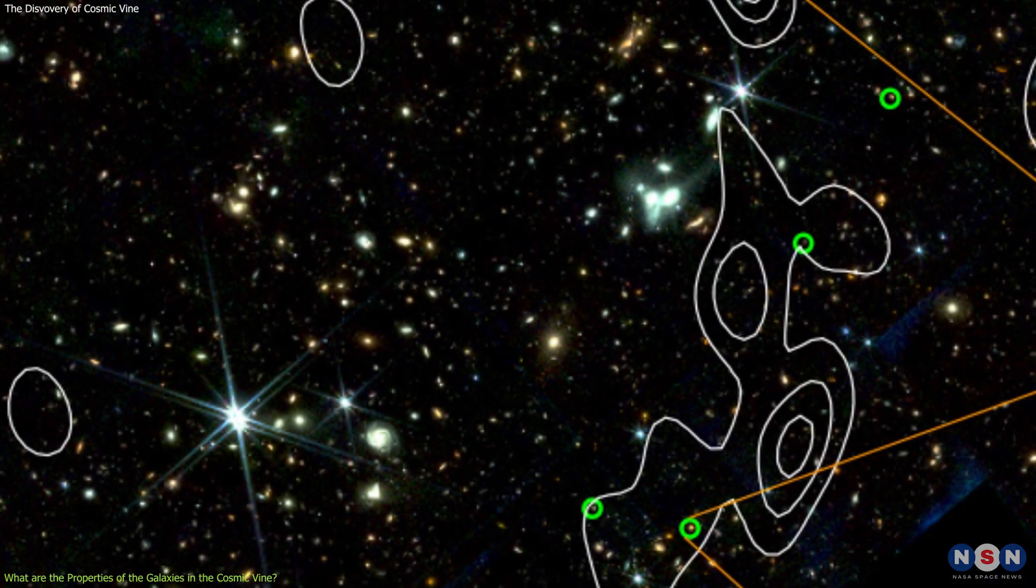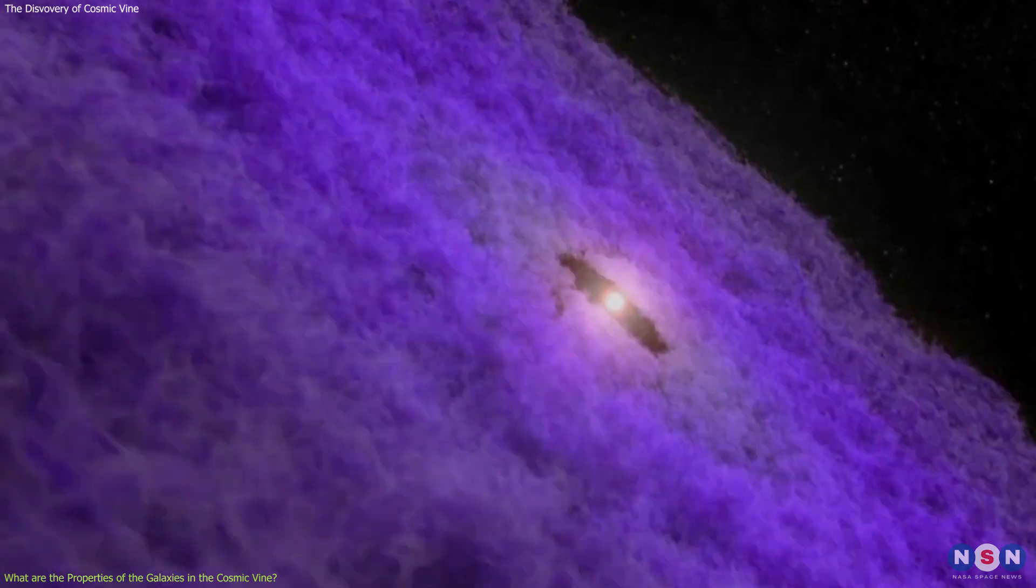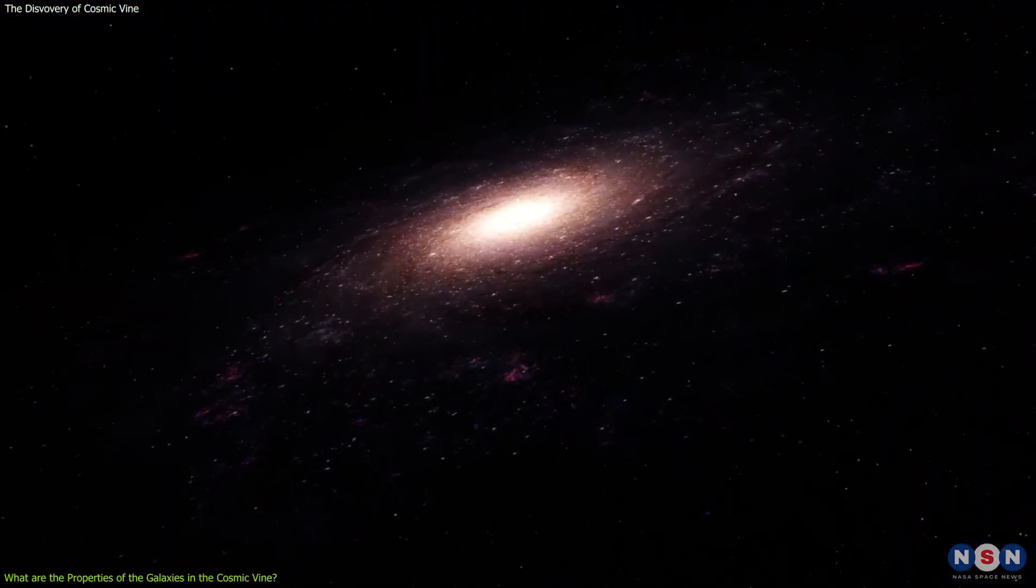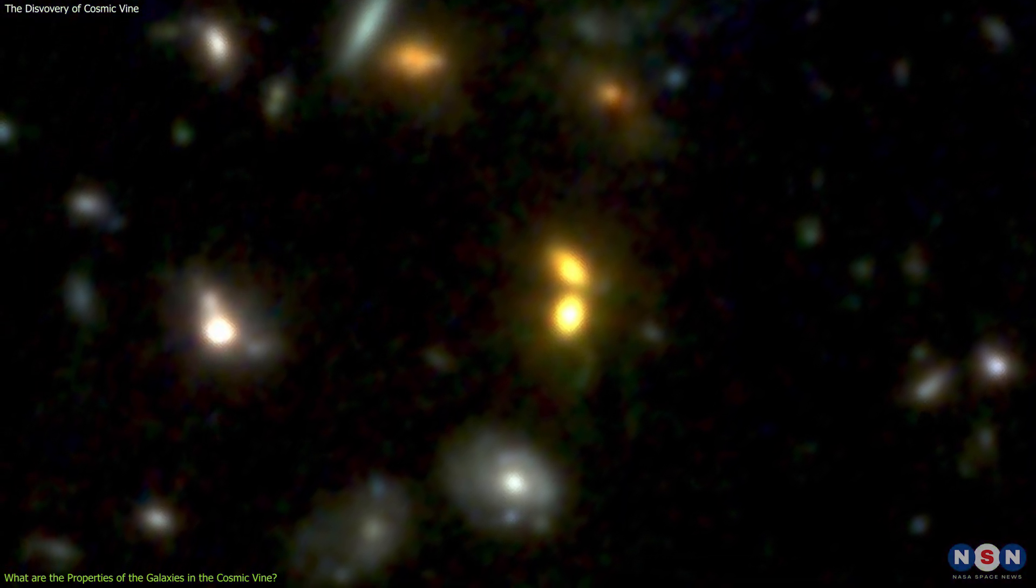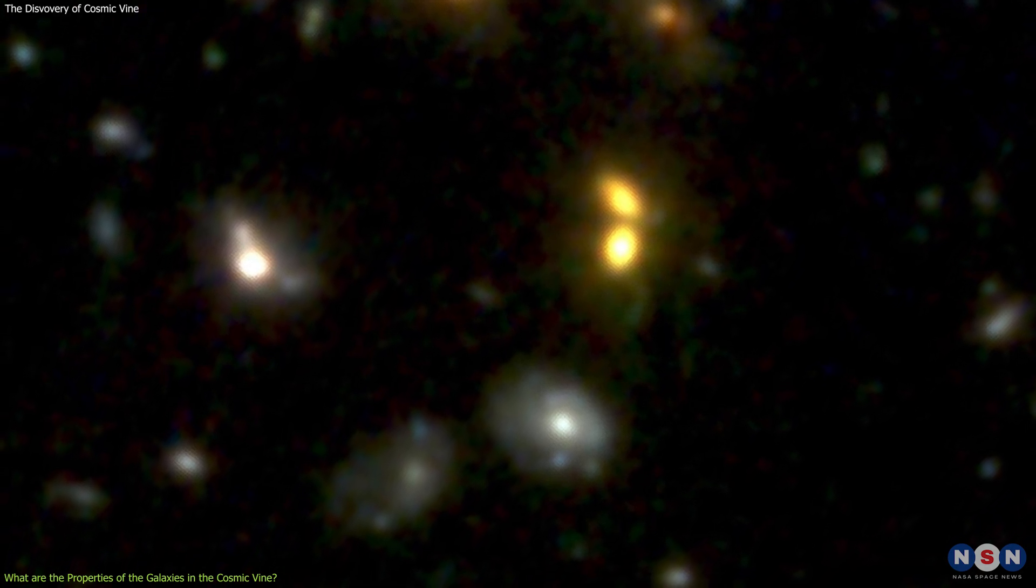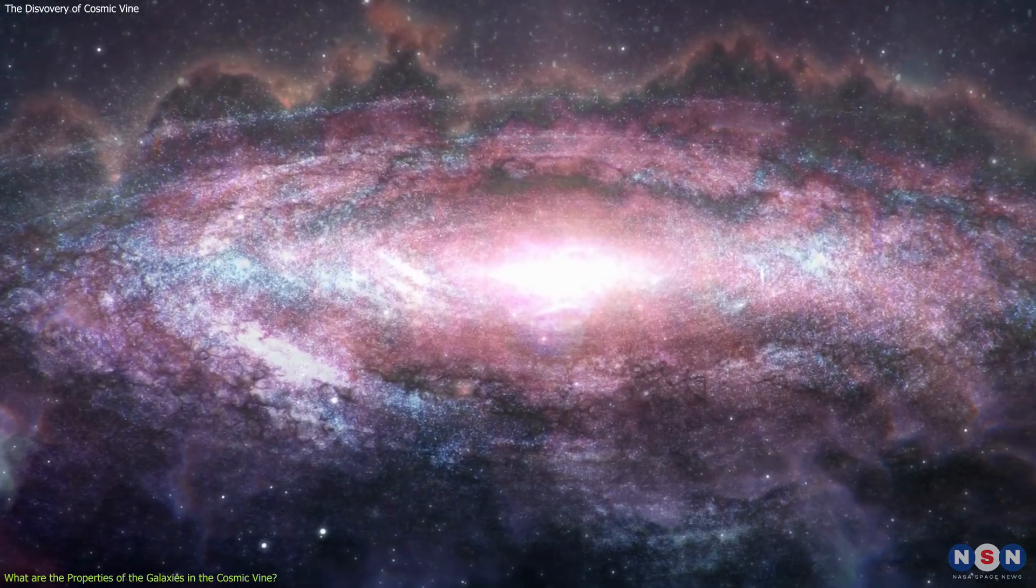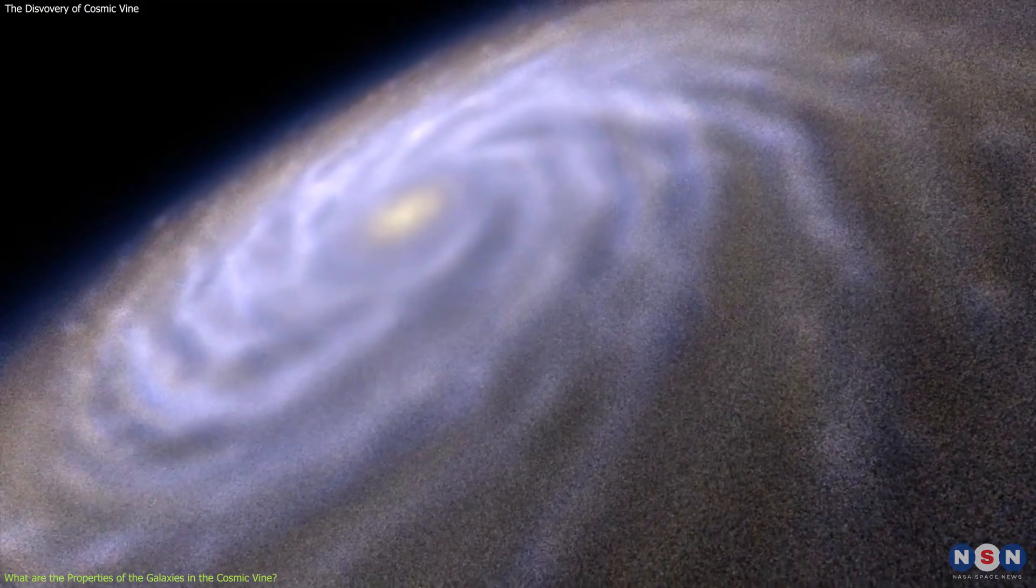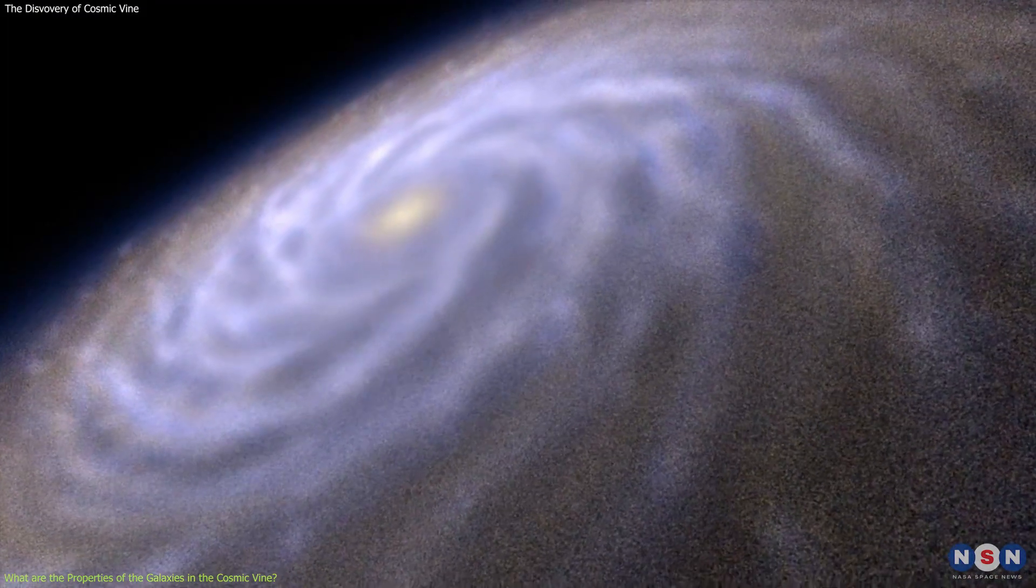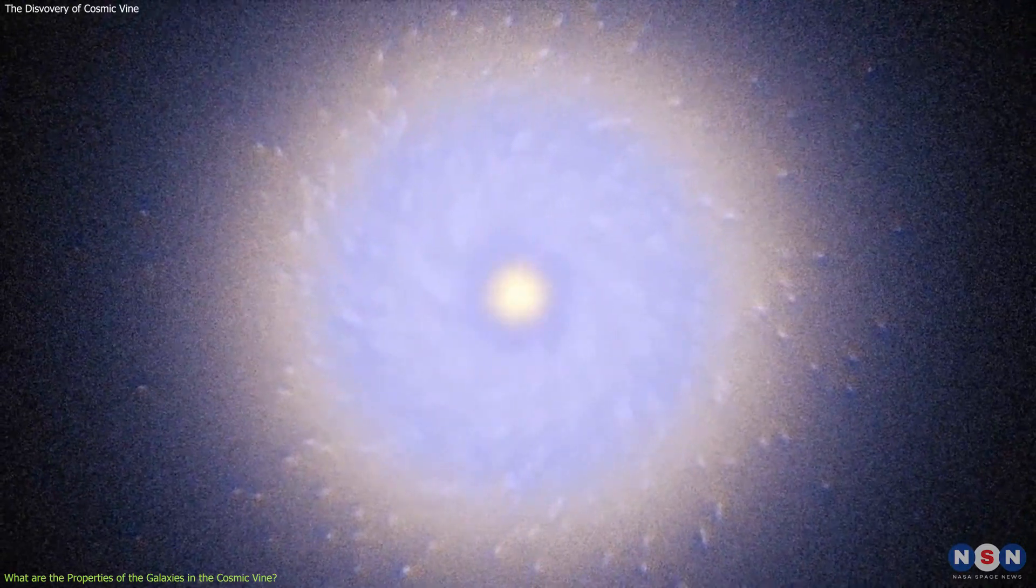Some of the galaxies in the Cosmic Vine are very dusty, while others are relatively dust-free. These galaxies also have different morphologies, or shapes, ranging from irregular to disk-like to elliptical. Morphology is an indicator of how the galaxy has been affected by gravity, rotation, and interactions.